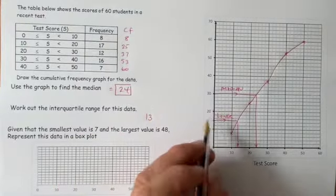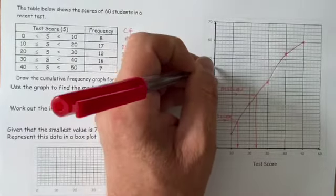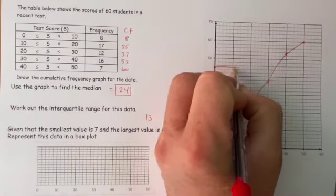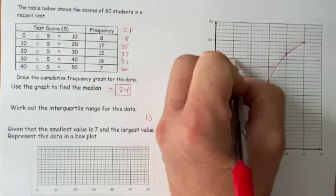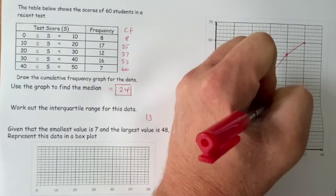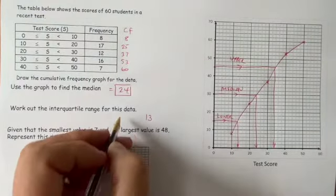And we also need to go—if we've gone 15 and 15, another 15 up takes me to 45, and I need to draw a line going across there. And that's at the upper quartile, and then that takes me down to roughly 34, and that would be the upper quartile.